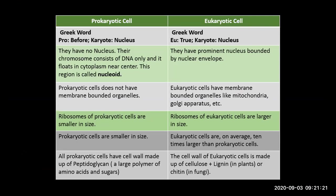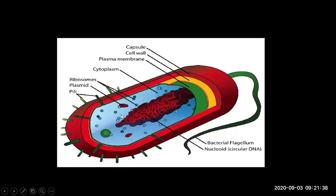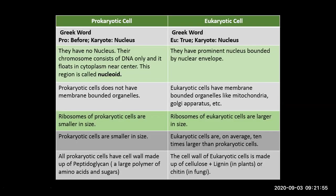Prokaryotic cells have no nucleus, and their chromosome consists of only DNA — just DNA floating in the center, not a proper chromosome. That region is called the nucleoid region. This is a general bacterial cell where the DNA is floating in the center, called the nucleoid. So it's not proper chromosomes — it's just DNA floating in the center.